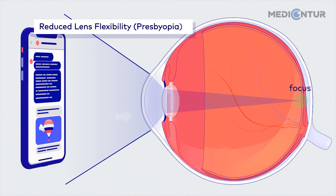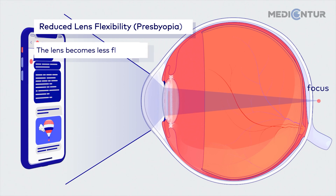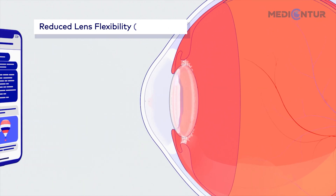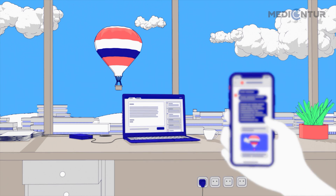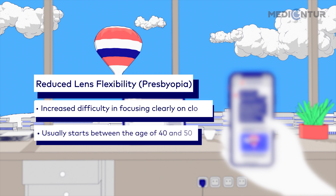Lens accommodation worsens with age, as the lens itself becomes more rigid and less flexible, causing increased difficulties in focusing on nearby objects. This condition is called presbyopia, and is developed by most people between the age of 40 to 50.